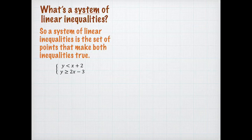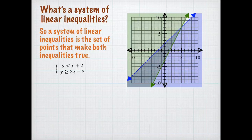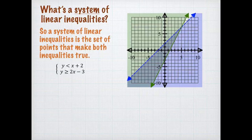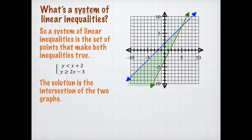Look, for example, at this system of inequalities. In order to solve this system, I first graph one of the inequalities, which happens to be the bottom one: y is greater than or equal to 2x minus 3. I graph the second inequality, y is less than x plus 2, and the solution is the set of points that make both inequalities true — that's where the two inequalities intersect, that gray-green overlap between the two lines. That set of points is the solution to the system: y is less than x plus 2, and y is greater than or equal to 2x minus 3.